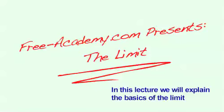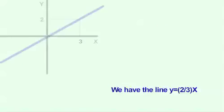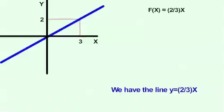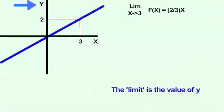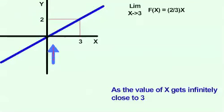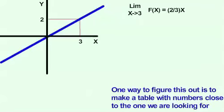In this lecture, we will be explaining the basics of the limit. We have the line y equals two-thirds x, and we want to find the limit as x goes to 3. The limit is the value of y as the value of x gets infinitely close to 3.